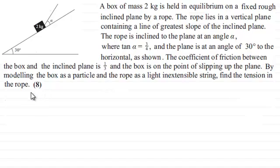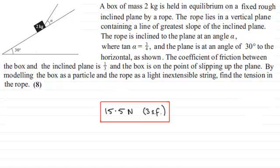If you'd like to have a go at this and haven't done so already, I'll just give you a moment to pause the video. When you come back I'll give you the answer for the tension in the rope, and then if you want you can see how I worked through the problem. The answer is that it's 15.5 Newtons to three significant figures. If you didn't get that, or just want to see how I did it, I'll take you through that solution.